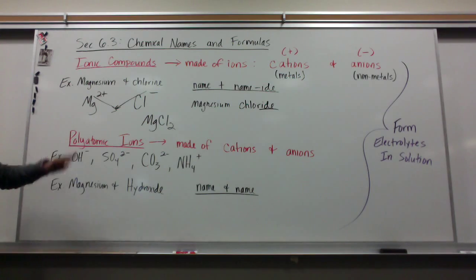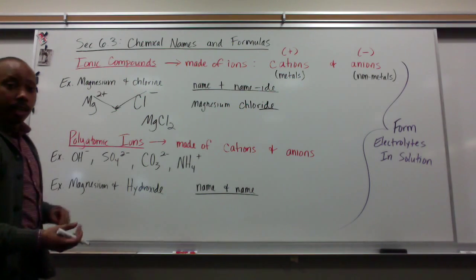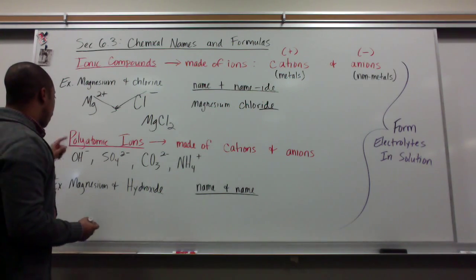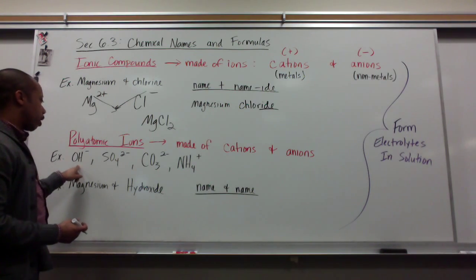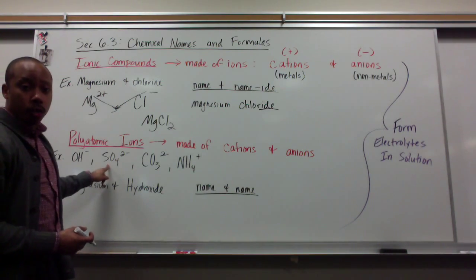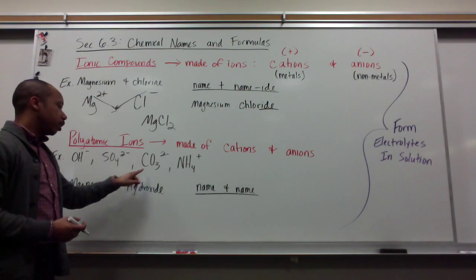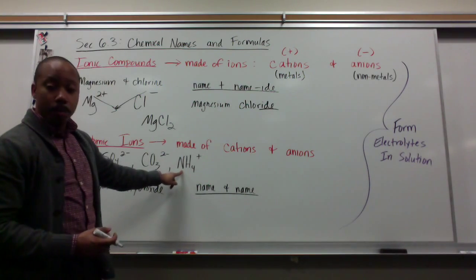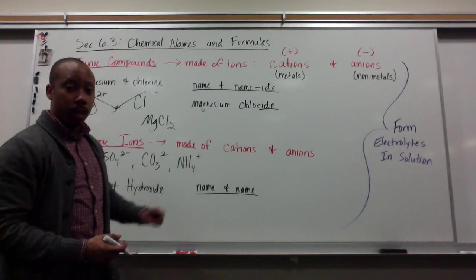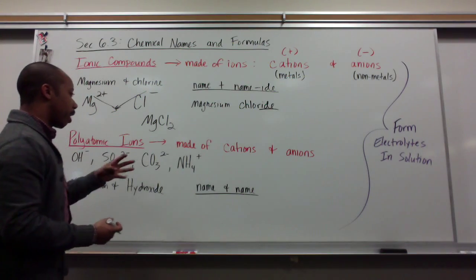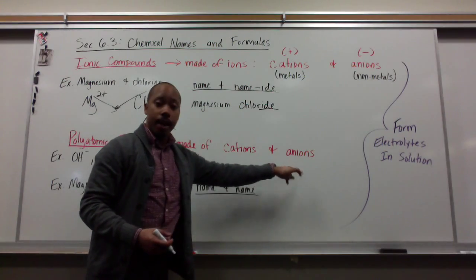We also know that we have polyatomic ions that can form ionic compounds. My polyatomic ions, examples would be hydroxide OH minus, sulfate SO4 2 minus, carbonate CO3 2 minus, and ammonium NH4 plus. These are my polyatomic ions. They're also made of cations and anions.